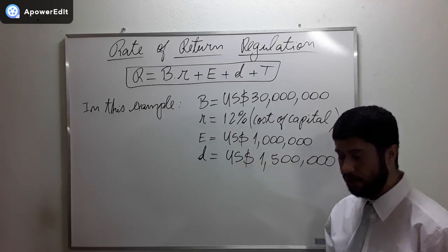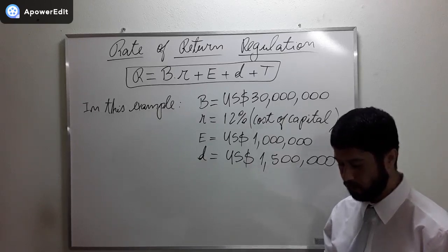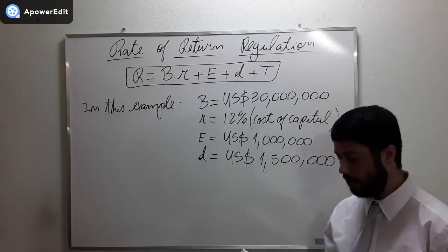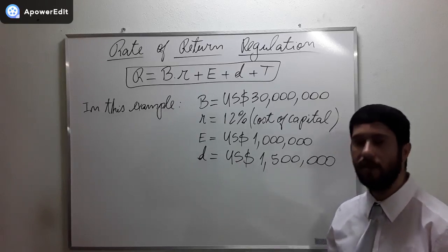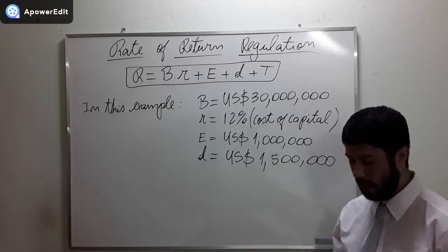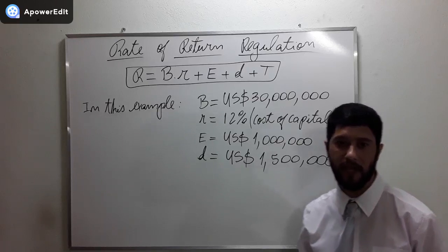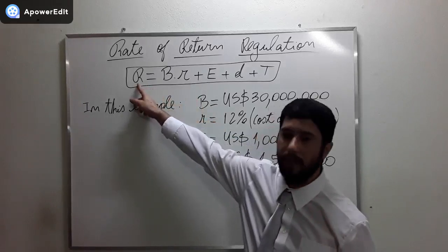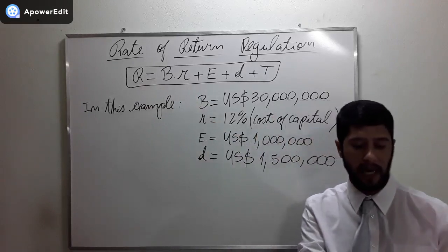Operating expenses of $1 million USD and depreciation expenses of $1.5 million USD. Further assume that the cost of capital is comprised of 50% debt and 50% equity. The cost of debt is 10% and the cost of equity is 14%.